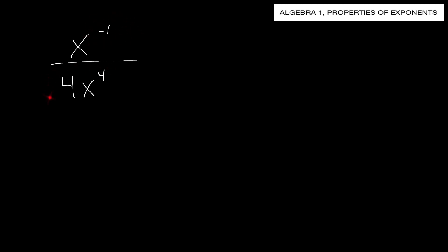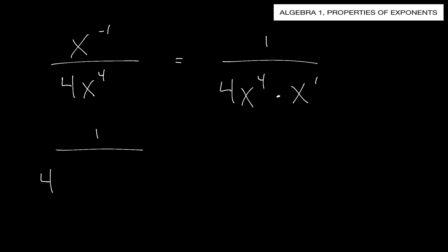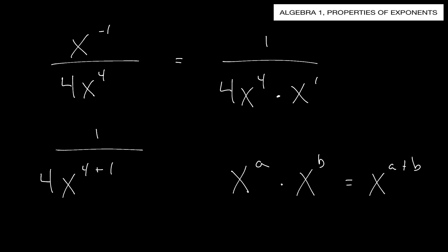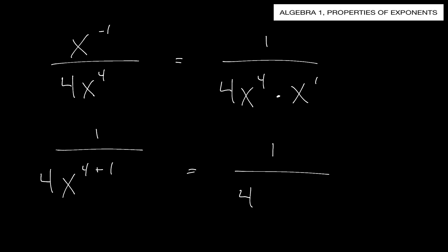Next: x to the negative first power divided by 4x to the fourth power. We have a negative exponent, so this x flips down to the denominator: one over 4x to the fourth times x to the first power. X to the negative one flips down and turns into positive x to the first power. Now using our rule - x to the fourth times x to the first, add the exponents - we get one over 4x to the fifth power.